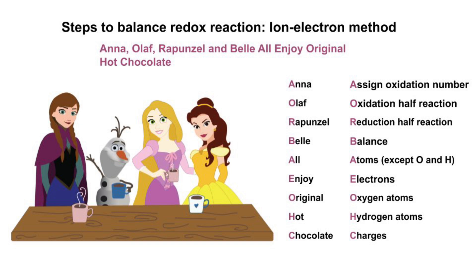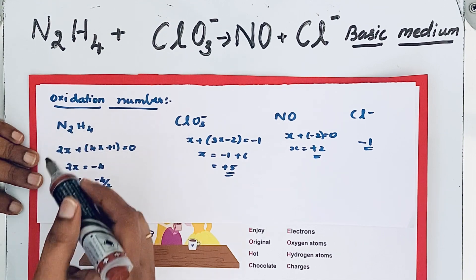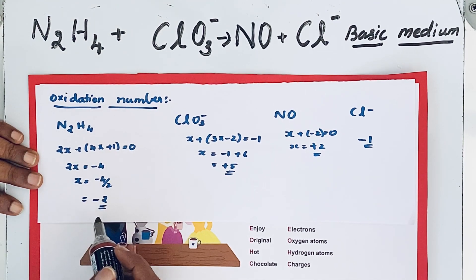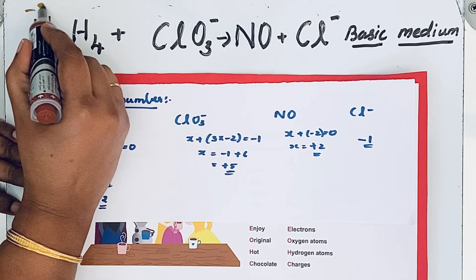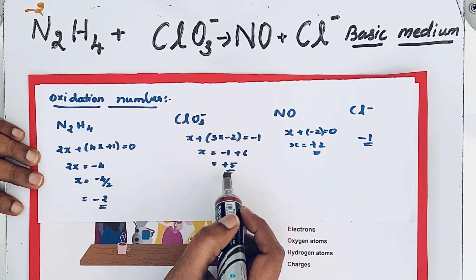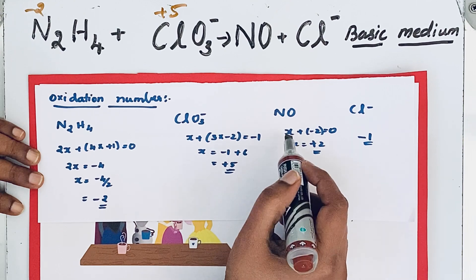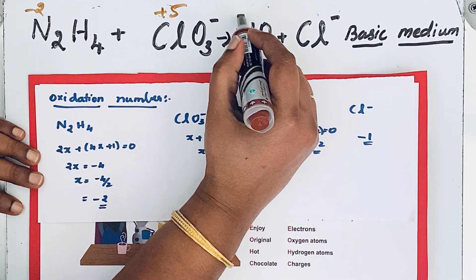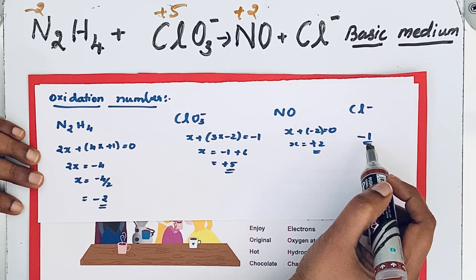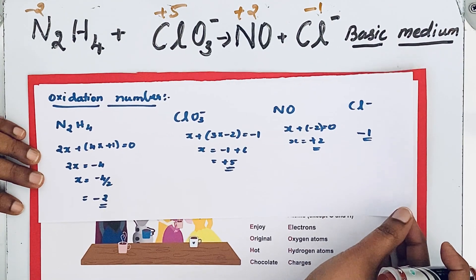Look at the first step: Anna — assign oxidation numbers. In N2H4 (hydrazine), the nitrogen oxidation number is minus 2. For chlorate ion (ClO3 minus), the oxidation number of chlorine is plus 5. In NO, the nitrogen oxidation number is plus 2. For chloride ion (Cl minus), it is a monoatomic ion, so the charge itself is its oxidation number: minus 1. We have completed the first step.